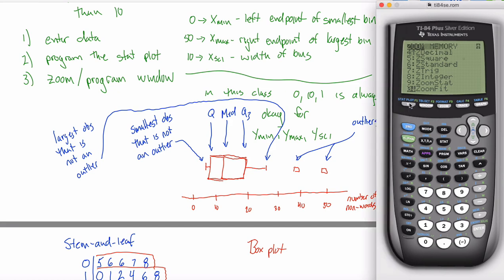But what you could have done instead of using zoom is you could have programmed your window. After I was in this stat plot menu, and I told my calculator that I wanted a box plot, which remember is this fourth type and not this fifth type, and I told it what list my data was on, and I chose whatever mark I wanted for my outliers.